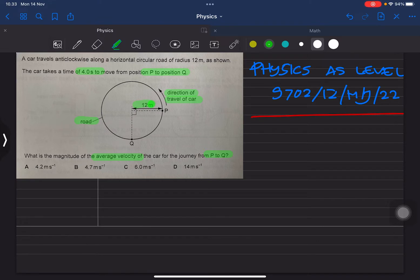From P to Q, they have average velocity. This is the same thing as displacement divided by time taken.